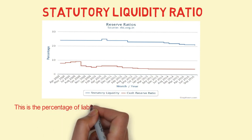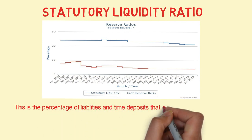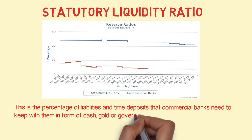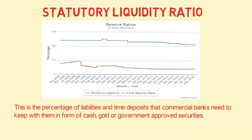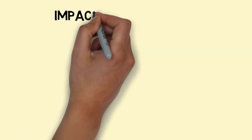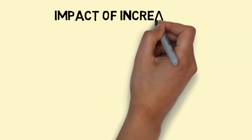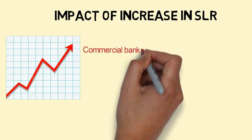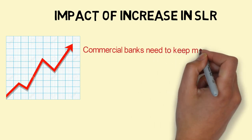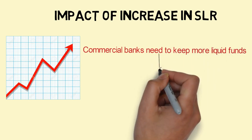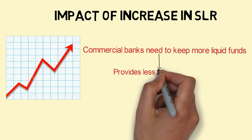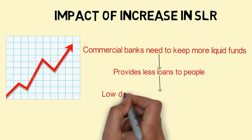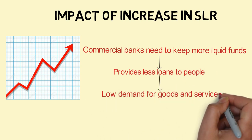The next tool is Statutory Liquidity Ratio (SLR). This is the percentage of liabilities and time deposits that commercial banks need to keep with themselves in the form of cash, gold, or government-approved securities. The impact of an increase in SLR: commercial banks need to keep more liquid funds, which leads to less loans to people, lower demand for goods and services, and lower prices.